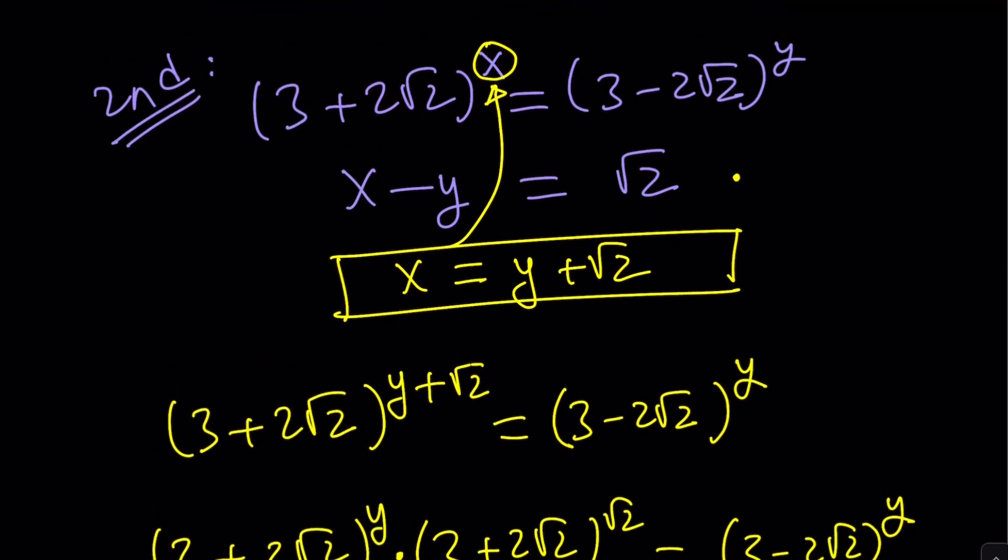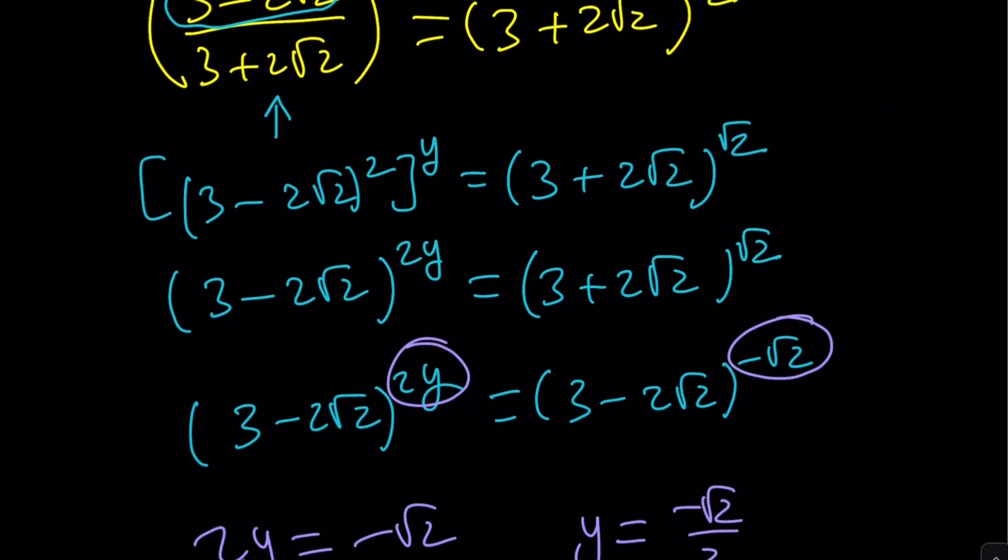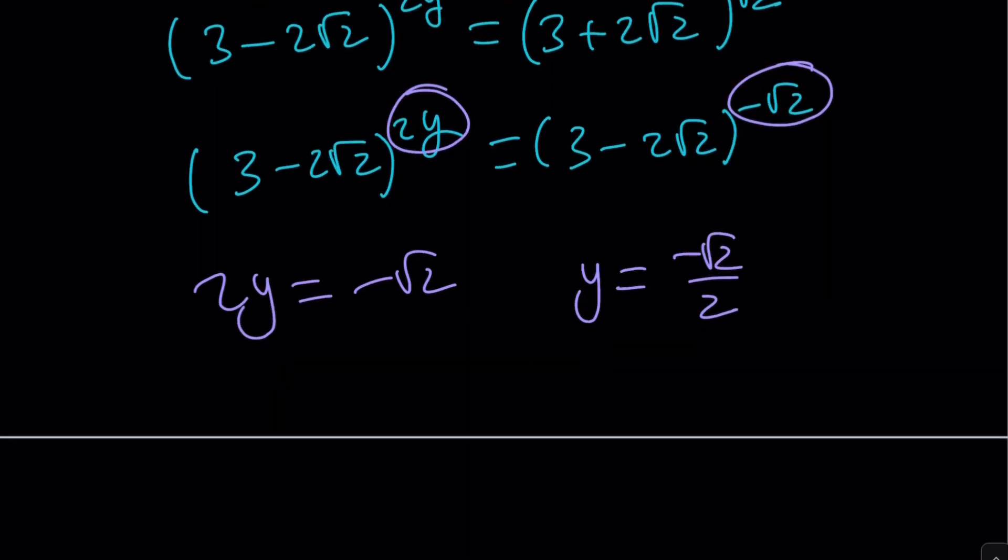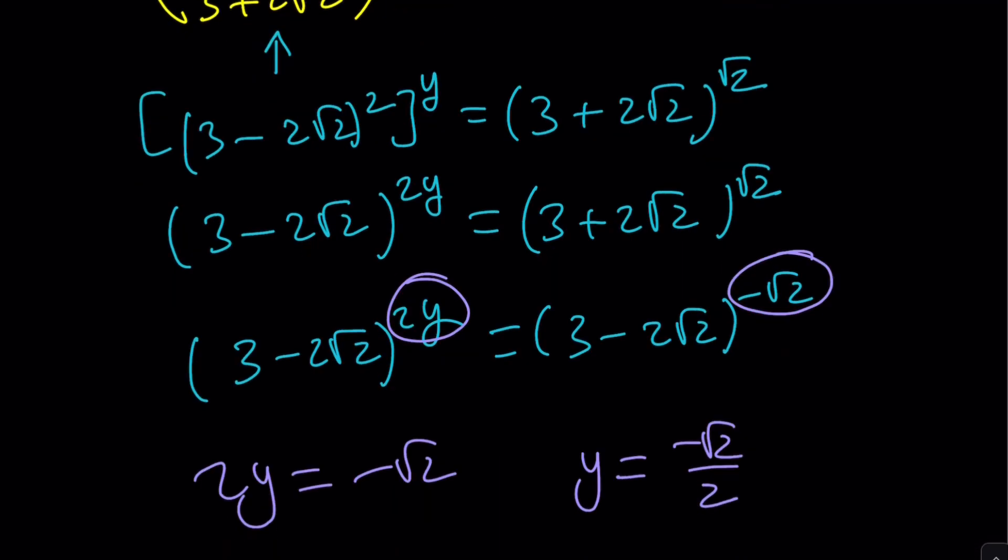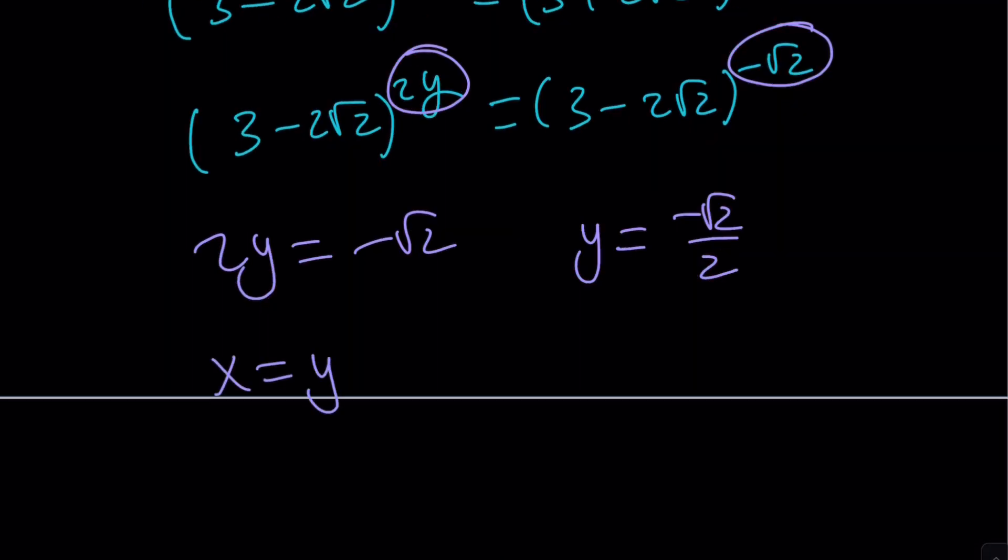And then I know that x is y + √2. This time I'm not using the opposite idea, but more like x is √2 more than y. Because it's a different approach. And if you add √2 to half of -√2, that's going to be √2/2.